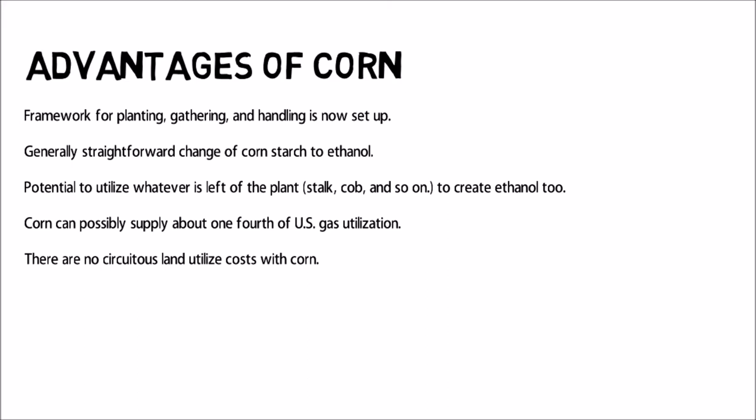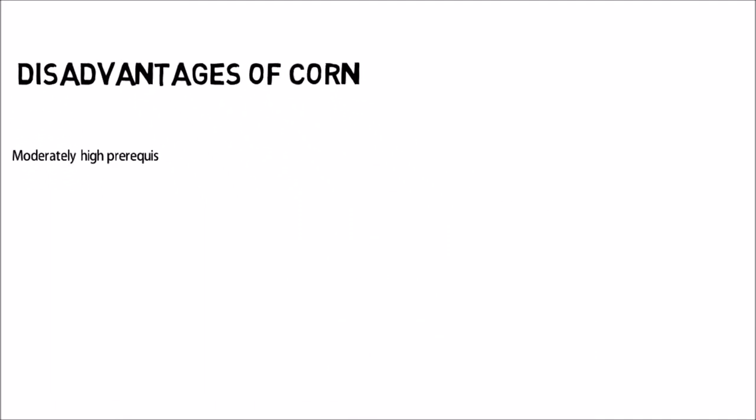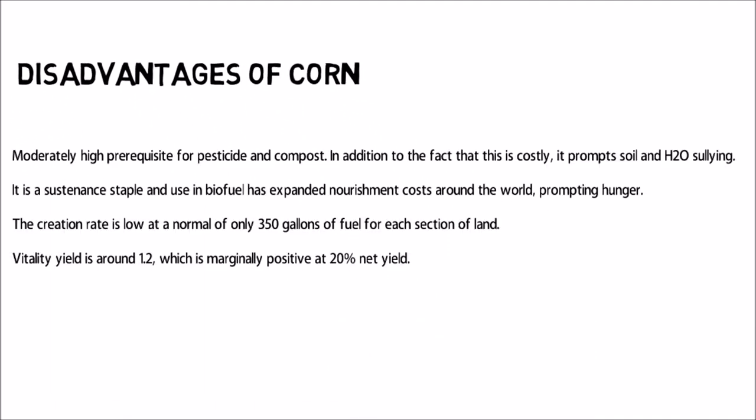The disadvantages of corn are: Moderately high prerequisite for pesticide and compost. In addition to the fact that this is costly, it prompts soil and H2O sullying. It is a sustenance staple and use in biofuel has expanded nourishment costs around the world, prompting hunger. The creation rate is low at a normal of only 350 gallons of fuel for each section of land. Vitality yield is around 1.2, which is marginally positive at 20% net yield.